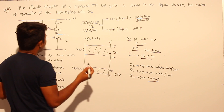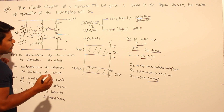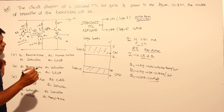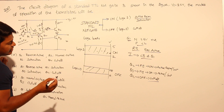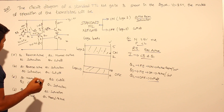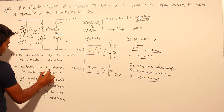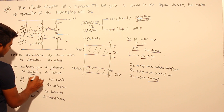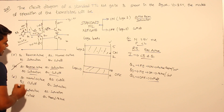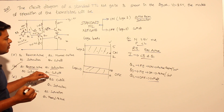Coming to the answer: Q1 is in reverse active, Q2 is in saturation, Q3 is in saturation, and Q4 is in cutoff. Checking the options — reverse active, saturation, saturation, cutoff — option B is the correct answer for this question.